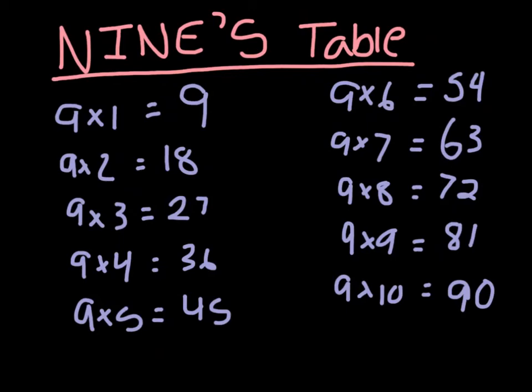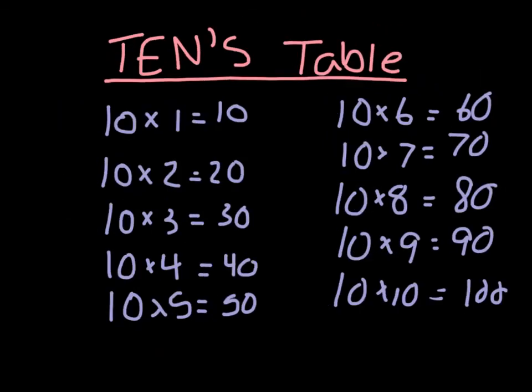Now let's go on to our last table — the tens table. It goes: 10 times 1 is equal to 10, 10 times 2 is equal to 20, 10 times 3 is equal to 30, 10 times 4 is equal to 40, 10 times 5 is equal to 50, 10 times 6 is equal to 60, 10 times 7 is equal to 70, 10 times 8 is equal to 80, 10 times 9 is equal to 90, and 10 times 10 is equal to 100.